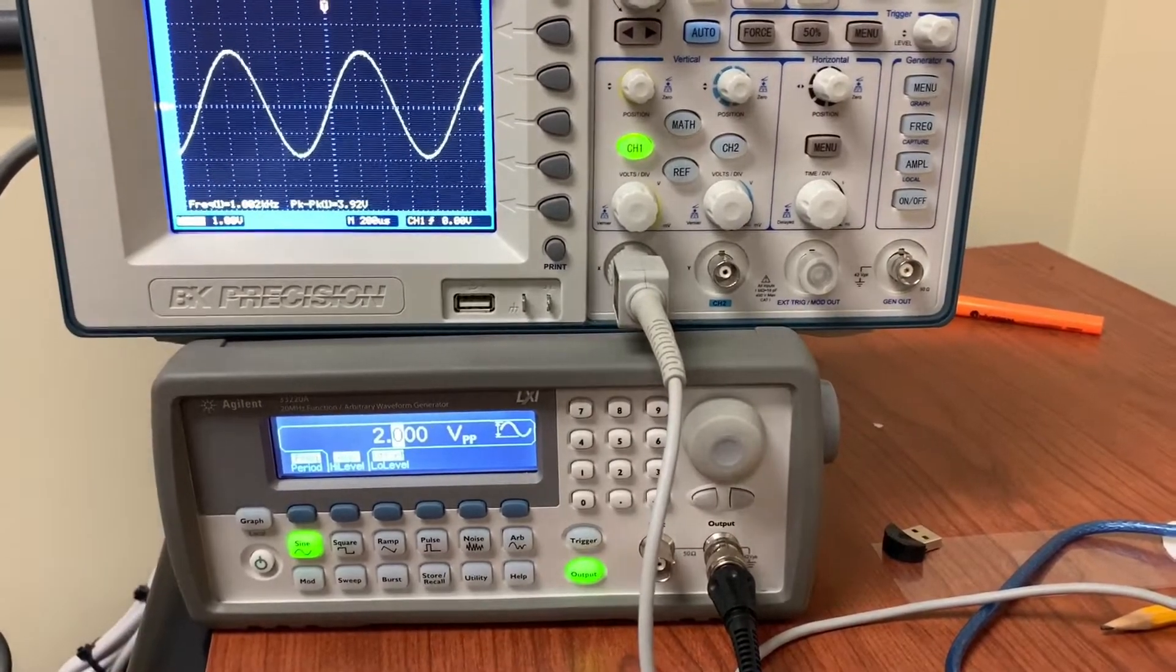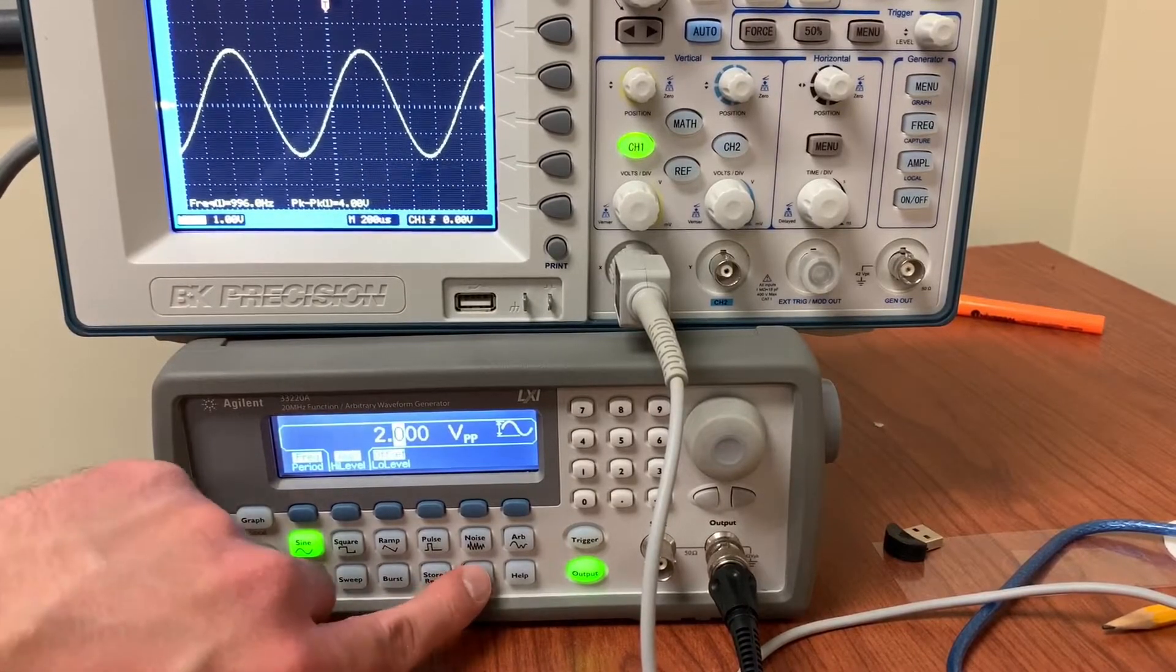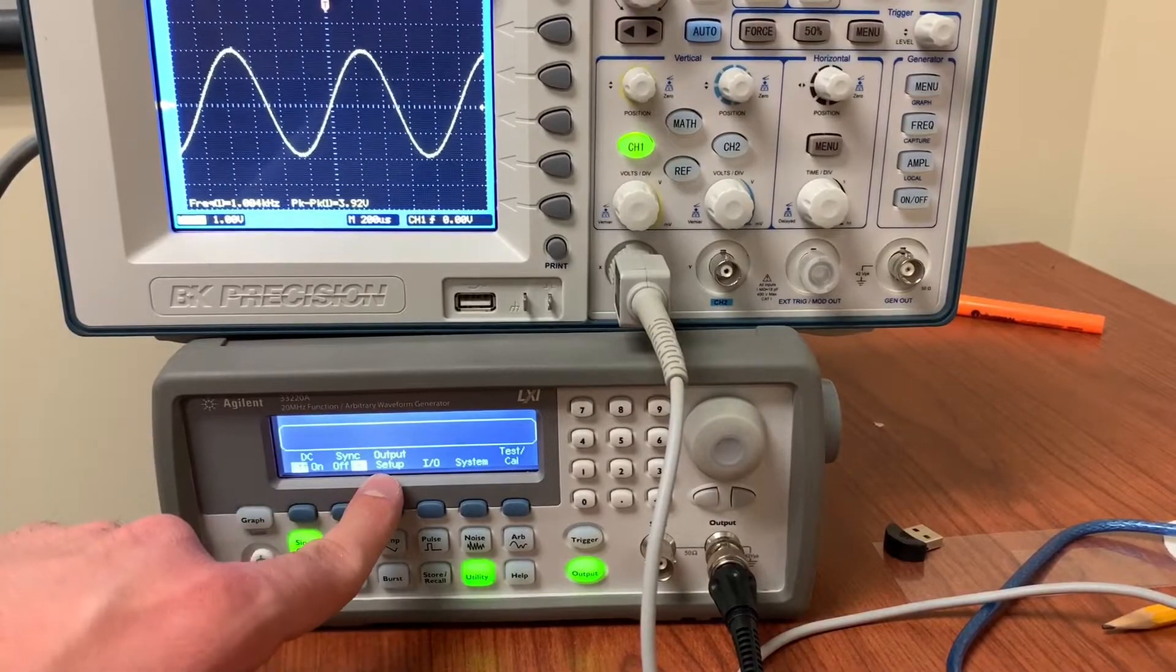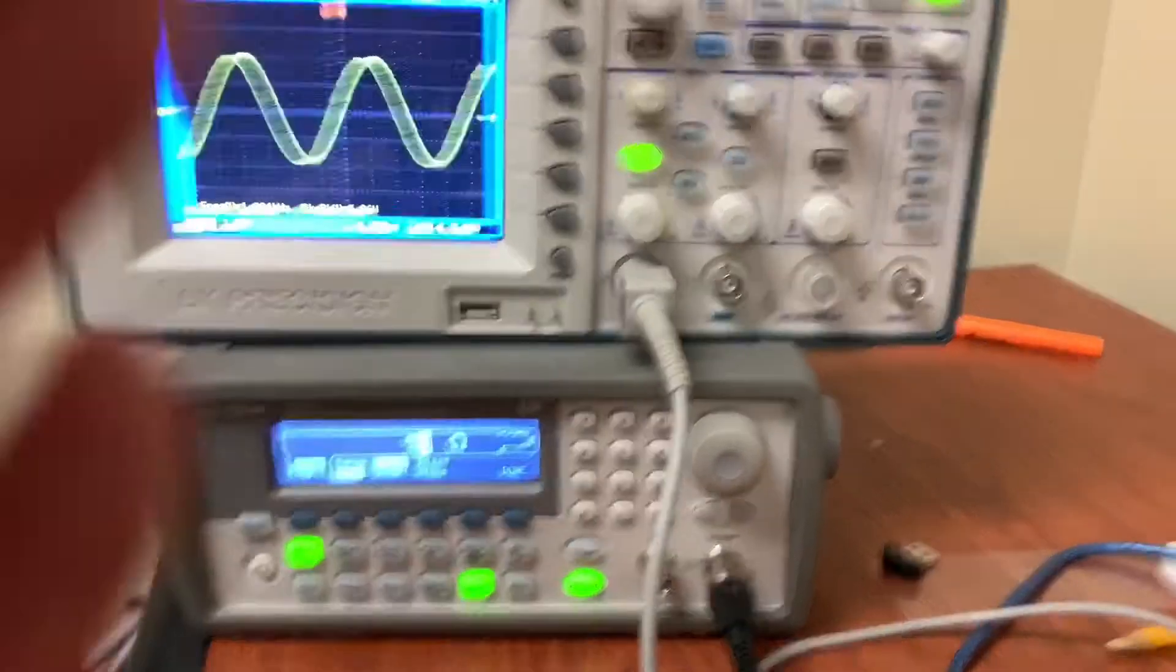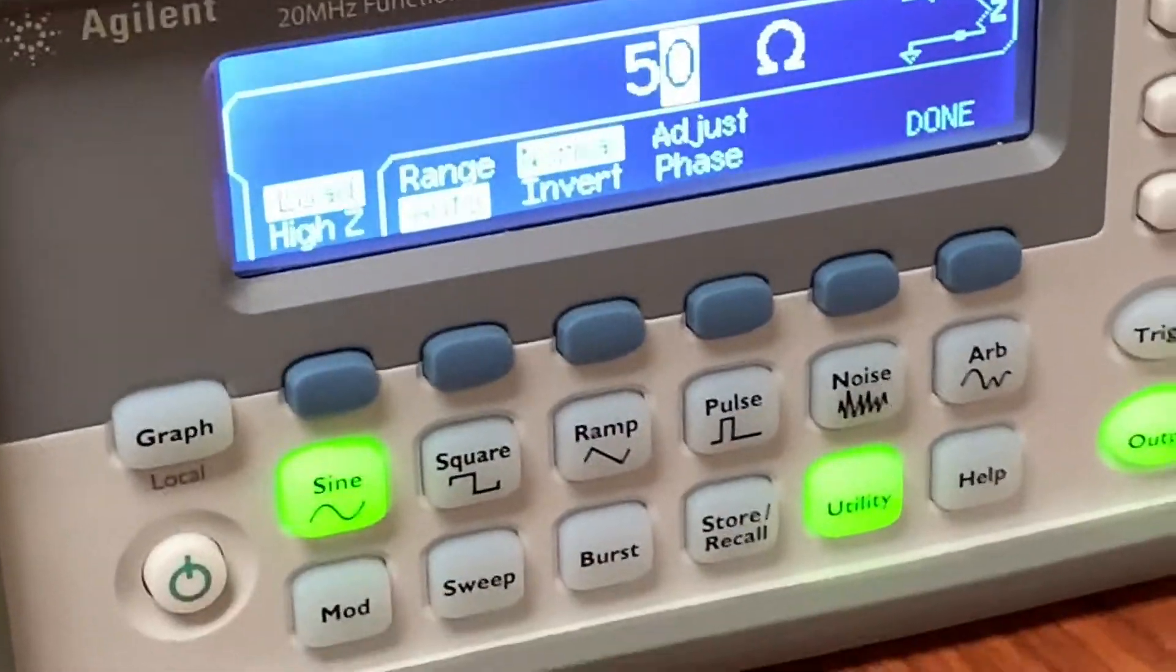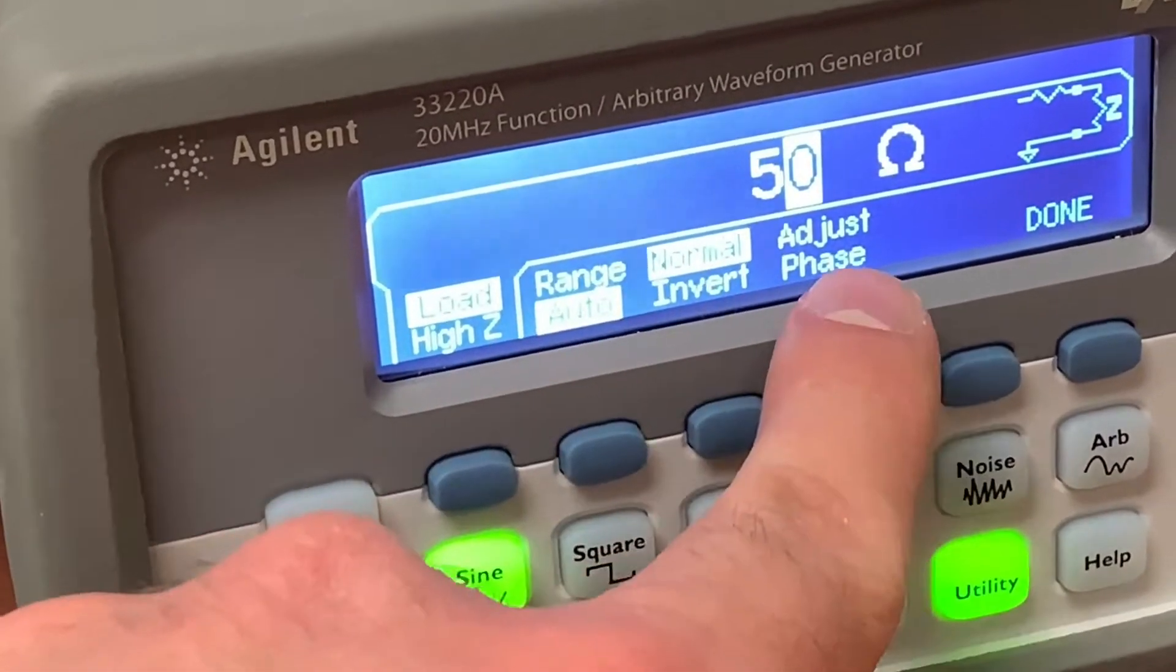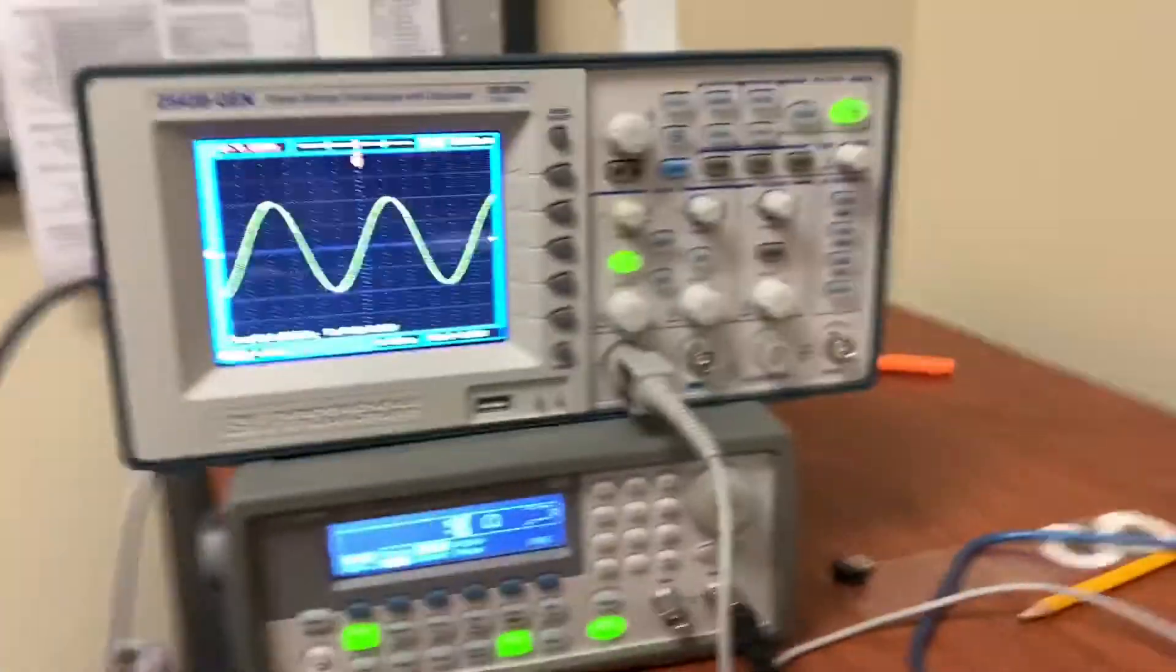So if we check that, we go to this button down here called utility. Click on that. And in here, there's the output setup. It's the third one over. Click on that. And you can see right down here, there's a symbol for 50 ohms. And the tab we're currently on is for load. So this function generator is assuming that we have a 50 ohm load connected to our function generator.